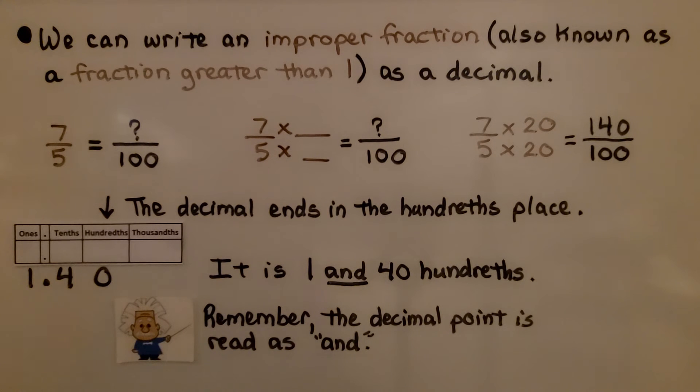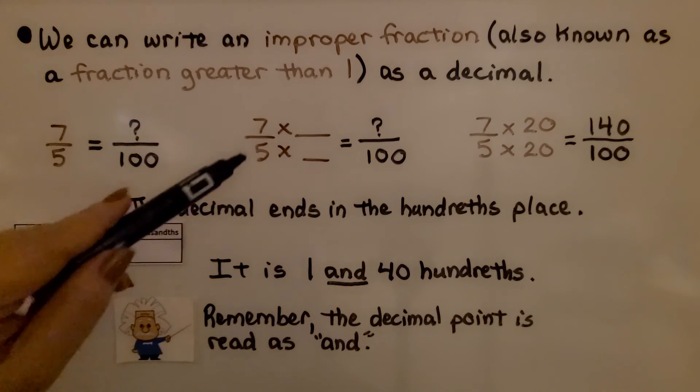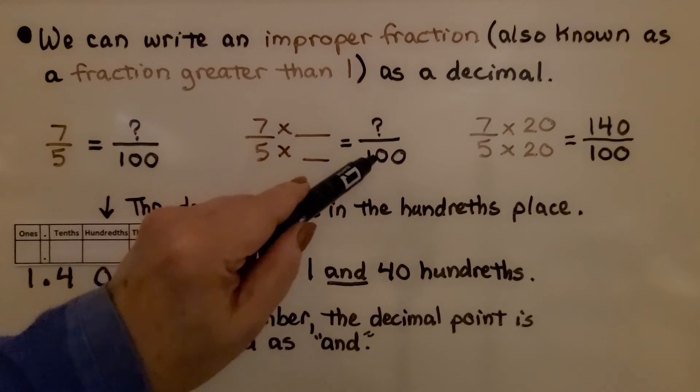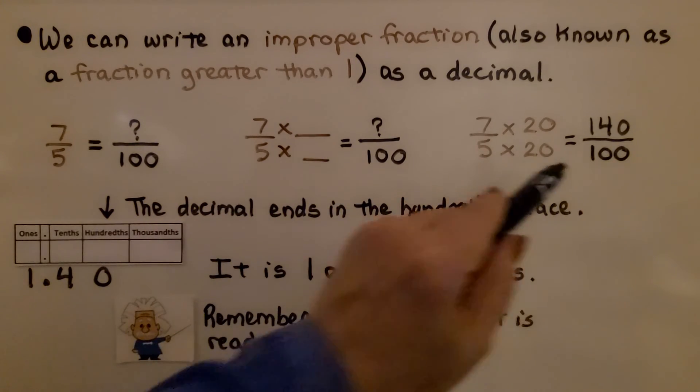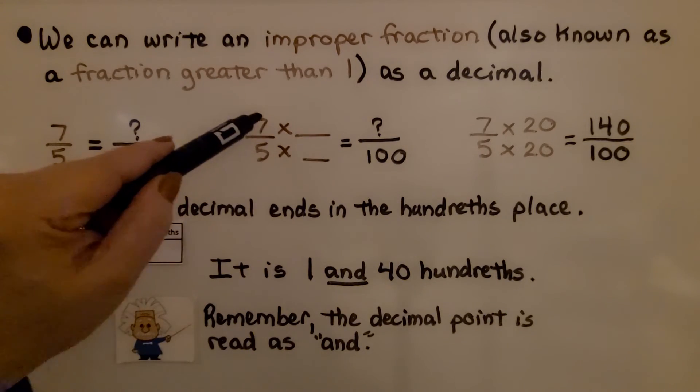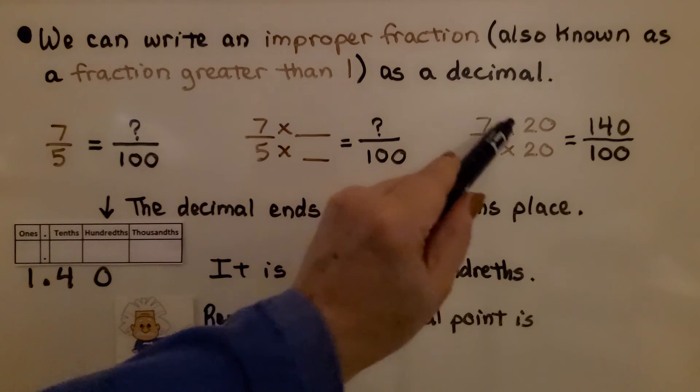We can write an improper fraction, also known as a fraction greater than 1, as a decimal. We have 7 fifths. We can write it with 100 as its denominator. We think to ourselves, 5 times something is 100. Well, that would be 5 times 20. We multiply the numerator by the same thing. We have 7 times 20, that would be 140 hundredths.